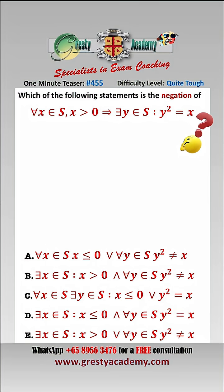This statement reads that for all x contained in set S, x greater than 0 implies that there exists a y contained in the set S, such that y squared equals x.